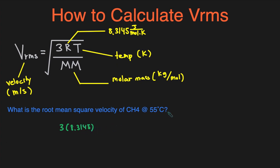The temperature is 55 degrees celsius. We have to turn this into kelvin by adding 273, and that'll give us 328 degrees kelvin.